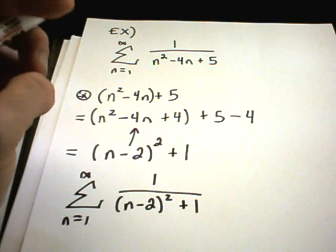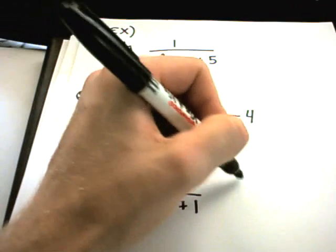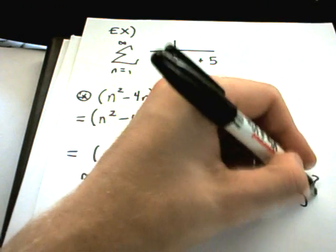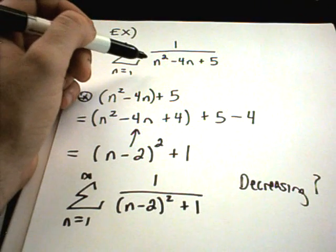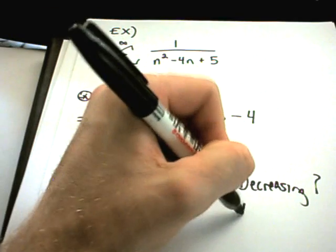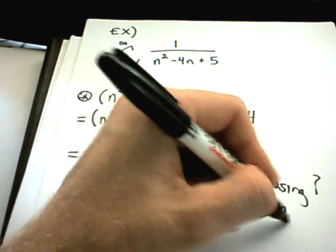The last thing we have to worry about is, is it decreasing? And this is one of those, again, you could go through and use the first derivative test, but this is going to be clearly decreasing, at least for n greater than or equal to 2.